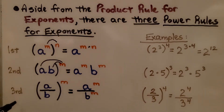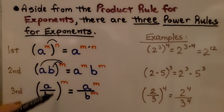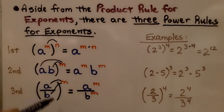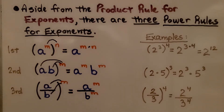For the third power rule for exponents, we have a quotient — a fraction. It's a divided by b, raised to the m power. Because they're on the inside of the parentheses, this m exponent affects both of them, so we have a to the m over b to the m. An example would be 2 thirds raised to the fourth power — that would be 2 to the fourth power divided by 3 to the fourth power, which can also be read as the quotient of 2 to the fourth power and 3 to the fourth power.